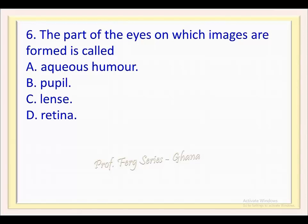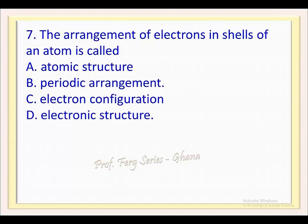Question 7. The arrangement of electrons in shells of an atom is called: a. Atomic structure, b. Periodic arrangement, c. Electron configuration, d. Electronic structure. The correct answer is c.